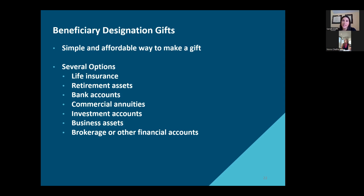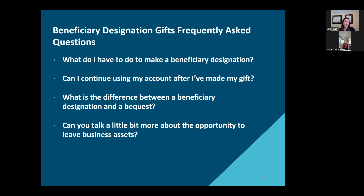This is something that we're seeing done more commonly — we're receiving the life insurance benefits or even some of the retirement accounts and assets. So all of these options are really a great way to make a powerful difference. But what would a person have to do in order to make that beneficiary designation? Is there a central place that they can specify that they want these different assets to go to a charitable organization, or does it vary based upon the different types of assets?